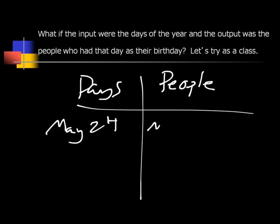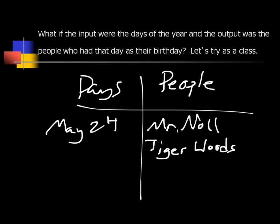For example, my birthday is May 24th. I also know Tiger Woods' birthday is May 24th. So in this case, the input is May 24th and the output is me and Tiger Woods. Is this a function? Does each input have only one output? No, because May 24th has two outputs — me and Tiger Woods. Each input has two outputs here. Not a function.